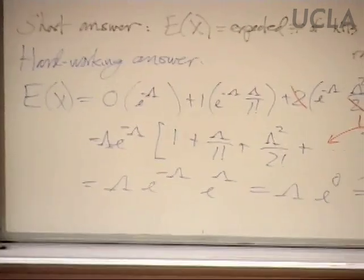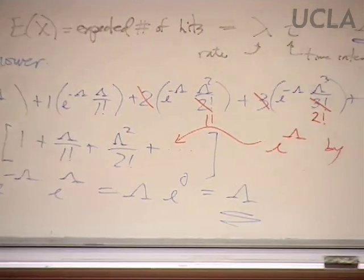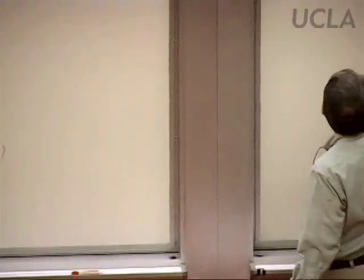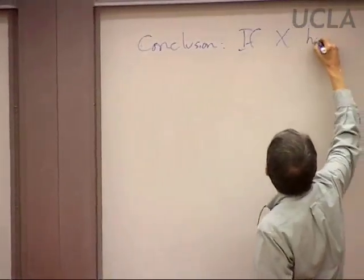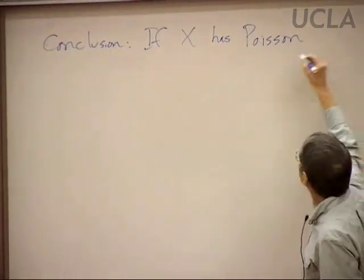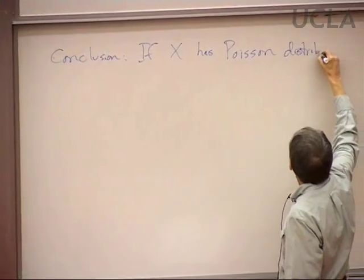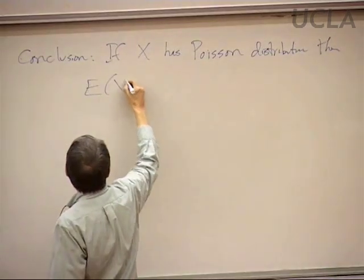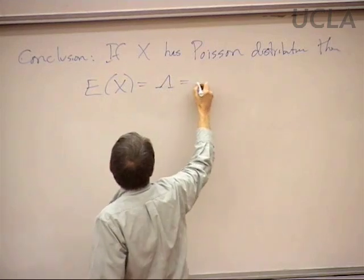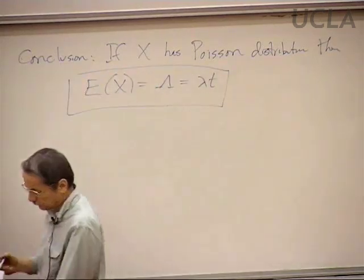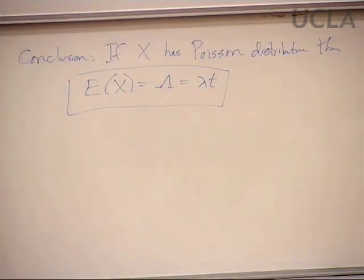Either from the short answer or from the hard-working answer, we get the same conclusion: if x has the Poisson distribution, its mean is simply capital lambda — little lambda times t. That answers one of our four questions from last time.